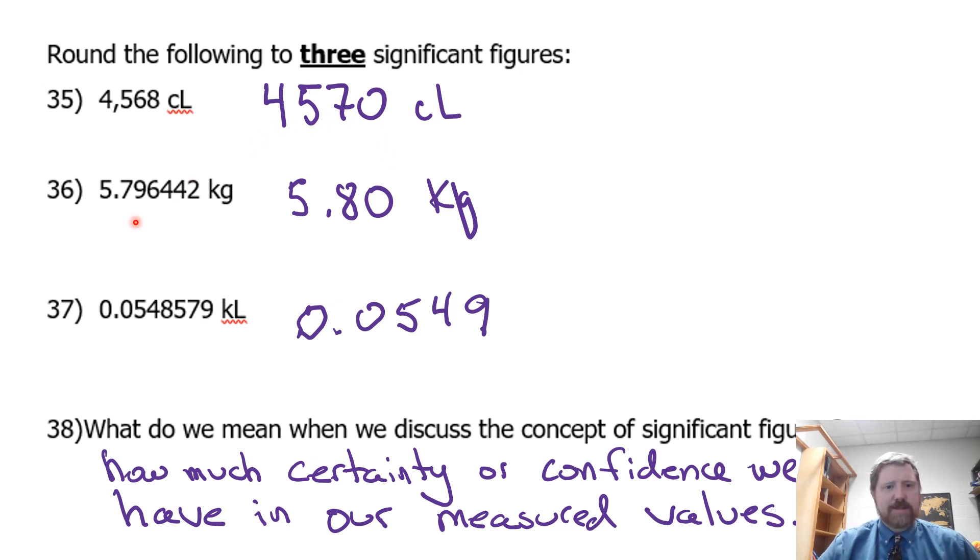Whereas in number 36, we have 5, 7, 9. We round that 6 up. Turns the 9 into a 0. Turns the 7 into an 8. And now we write it down. This 0 needs to be written. Otherwise, it's two sig figs. Watch, I'll hide it. Now you can't see it. Looks like it's two sig figs. It's 5.8. 5.80 is three sig figs. The decimal activates the righty 0. These are lefty zeros. They don't count.